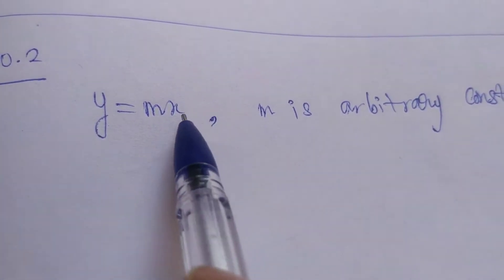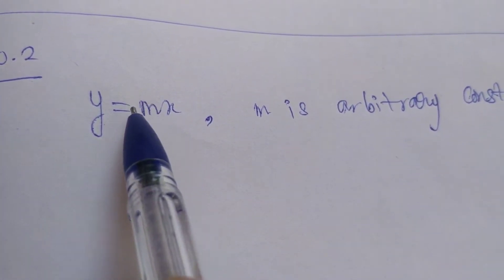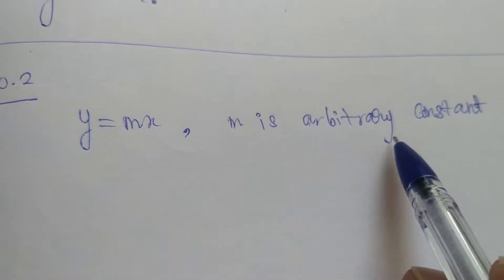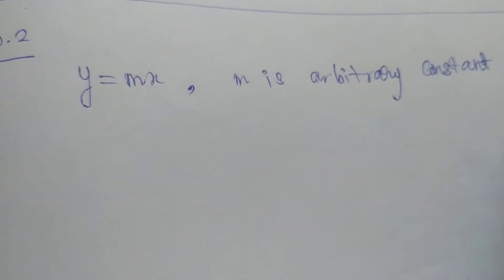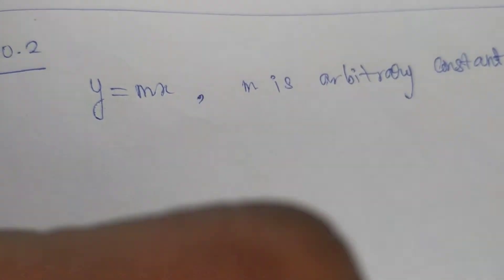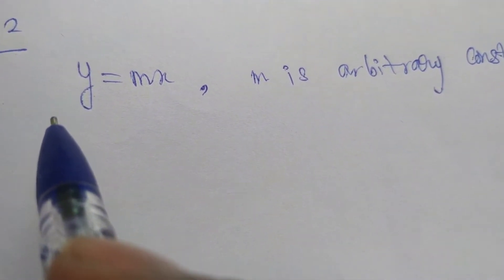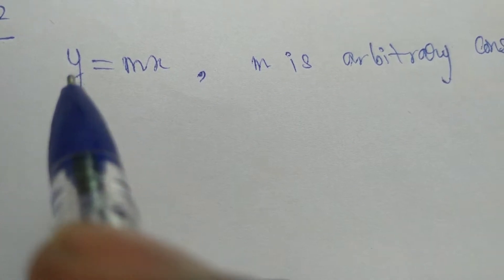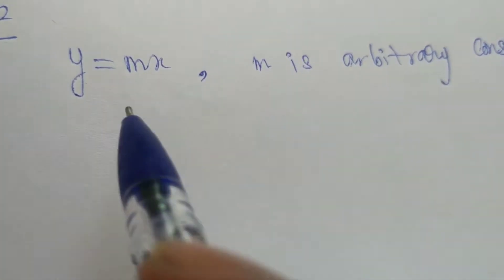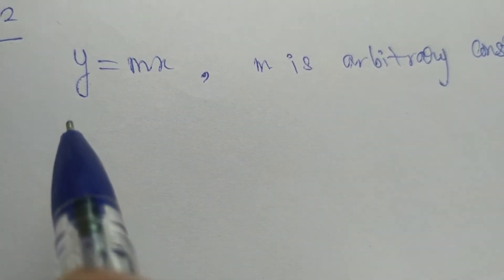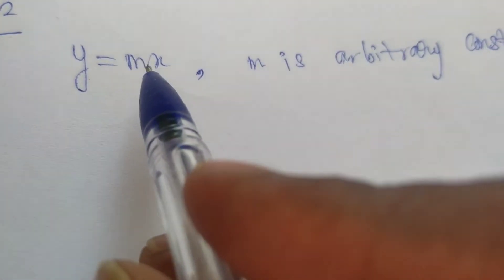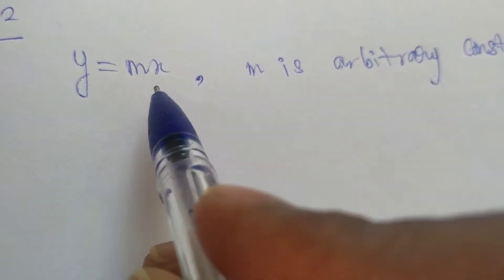In this case, m is the arbitrary constant. We will form the differential equation by applying differentiation and eliminating the arbitrary constant.